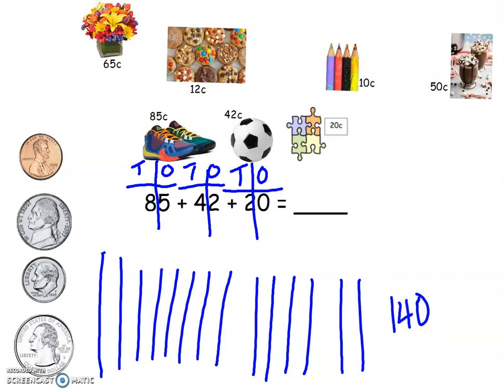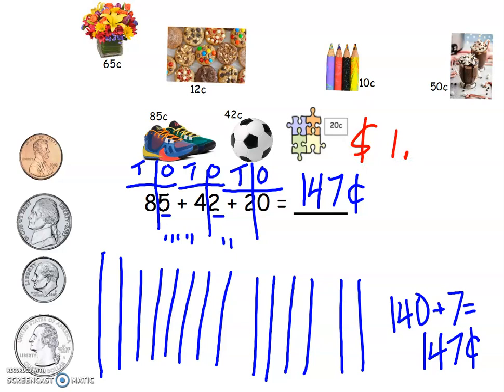So I can count my groups of ten: 140. And then I have my ones, can't forget your ones. I have five ones plus my two ones: six, seven. So 140 plus seven equals 147 cents. We know that 100 cents gives me a dollar, basically like that. I have a hundred cents, which is a dollar, and 47 cents left over.